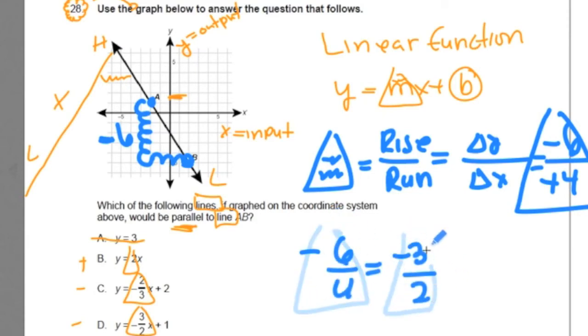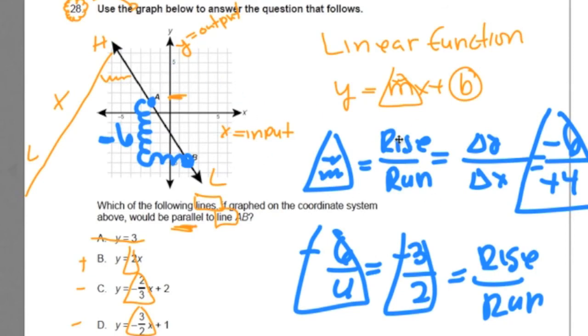This is our slope here, right? This is our rise to run relationship. And we did that visually, using the graph, thinking about slope in terms of rise to run. Now, which one of these has the same slope? Well, it's not A, it's not B. Is it C or D? It's D! D has the same slope.